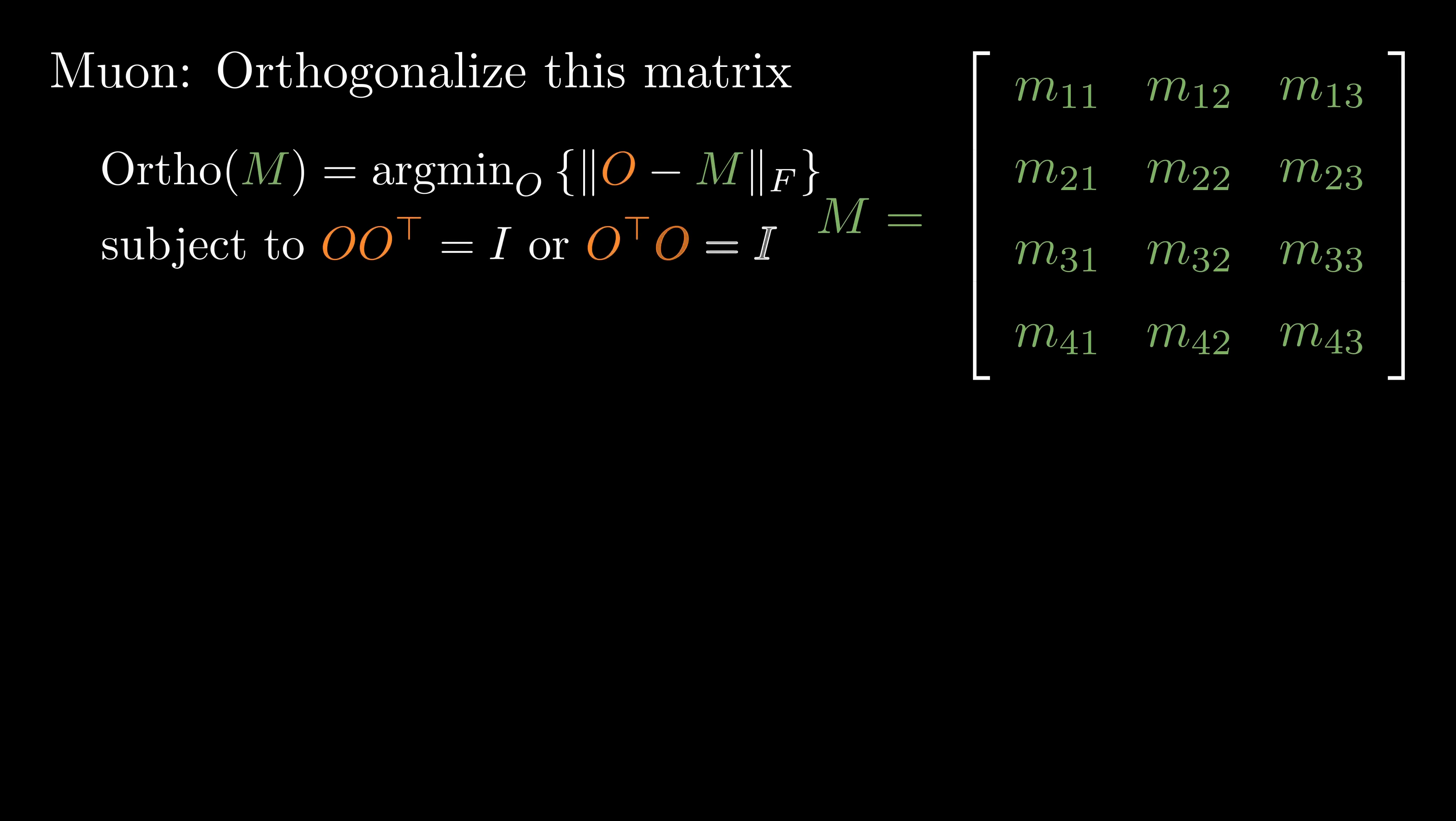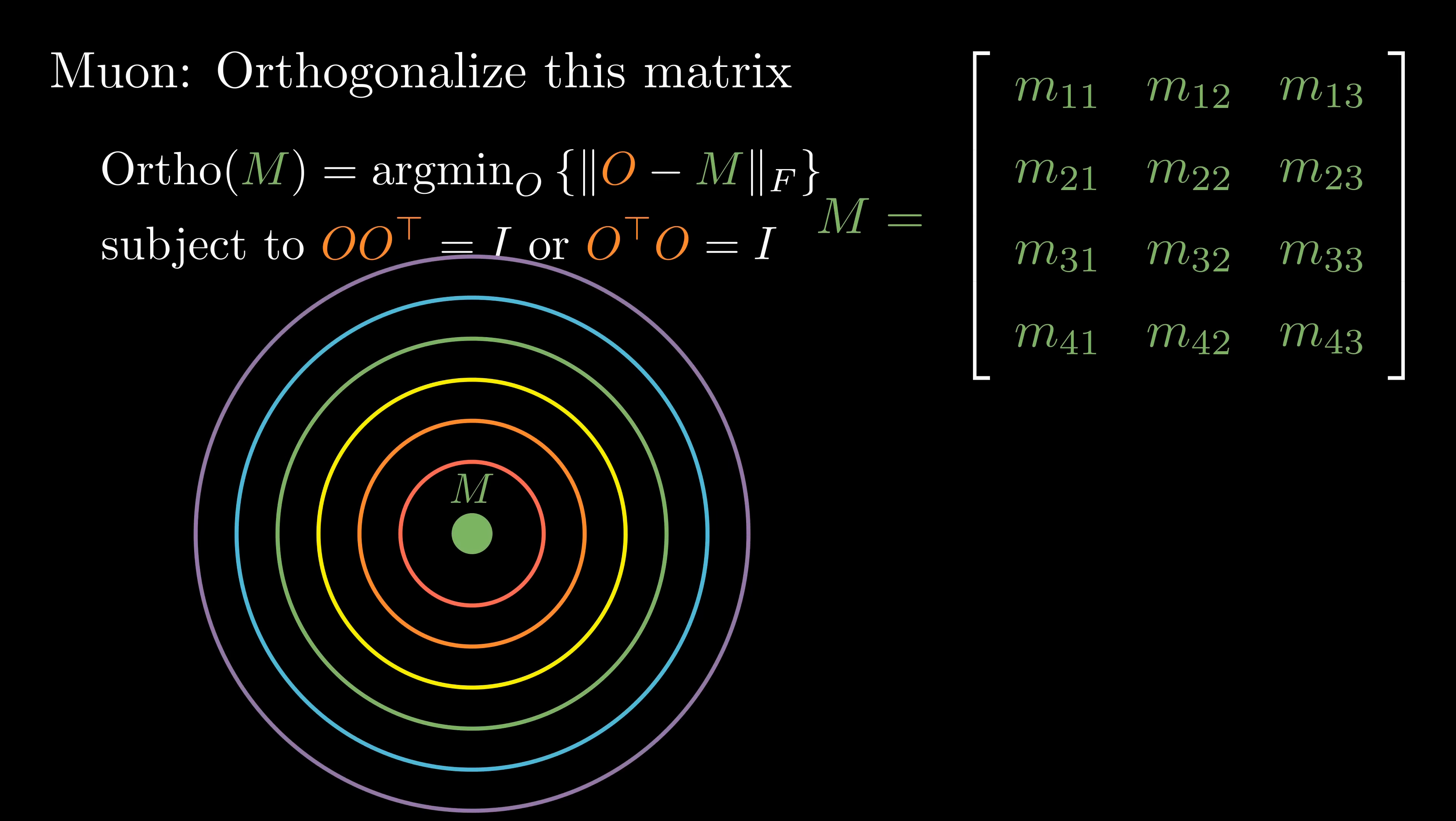Let's get more concrete. Suppose we have a 2D momentum matrix, which we call M. Orthogonalization is the process of finding a new matrix O that is as close as possible to M, but with the special property that its rows and columns are all orthogonal to each other. A key property of orthogonal matrix is that their transpose is also their inverse. To build some intuition, imagine a momentum matrix as a single point in the high dimensional space of all possible matrices. Our objective is to find the nearest matrix O to M that satisfies the orthogonality condition.